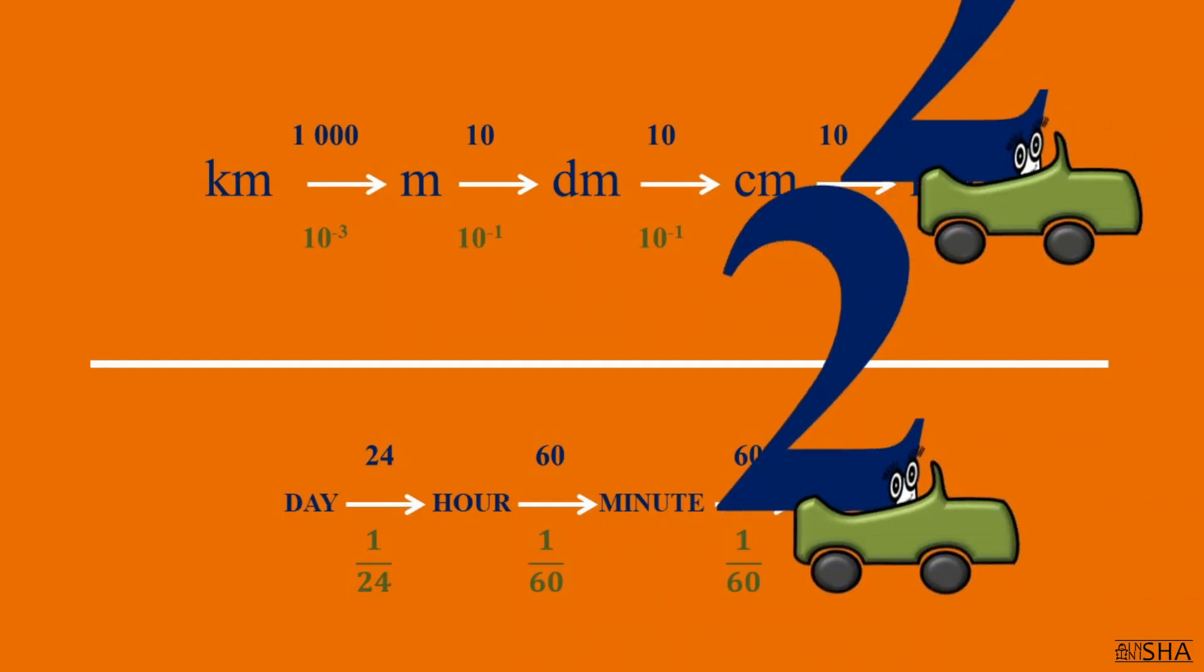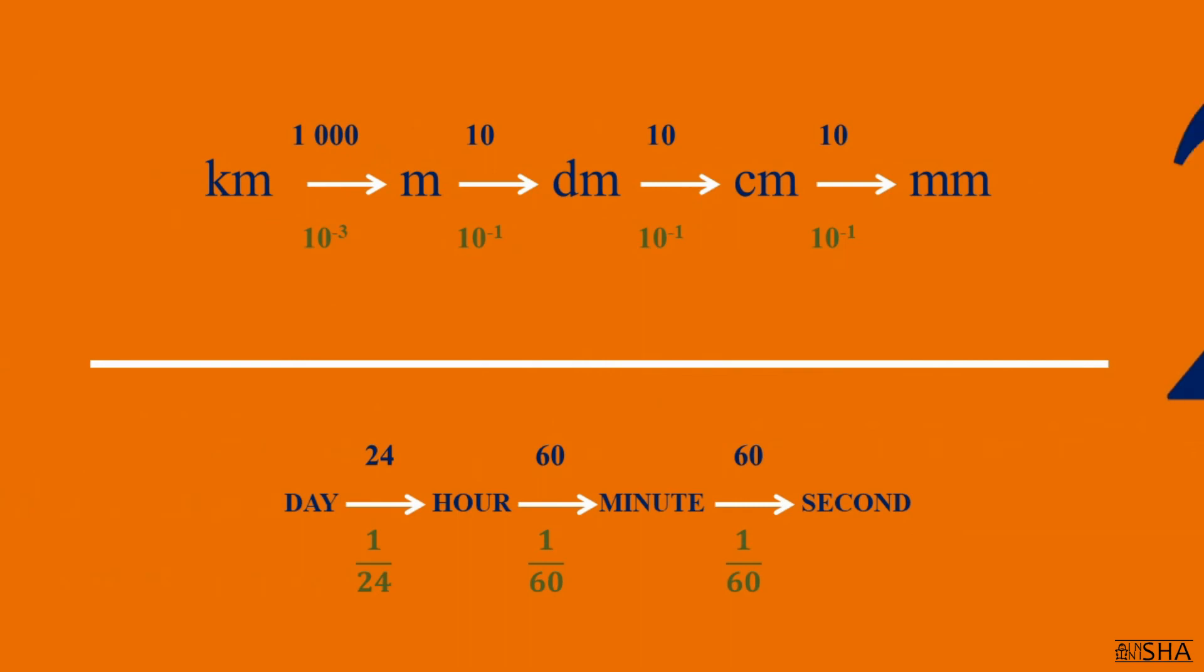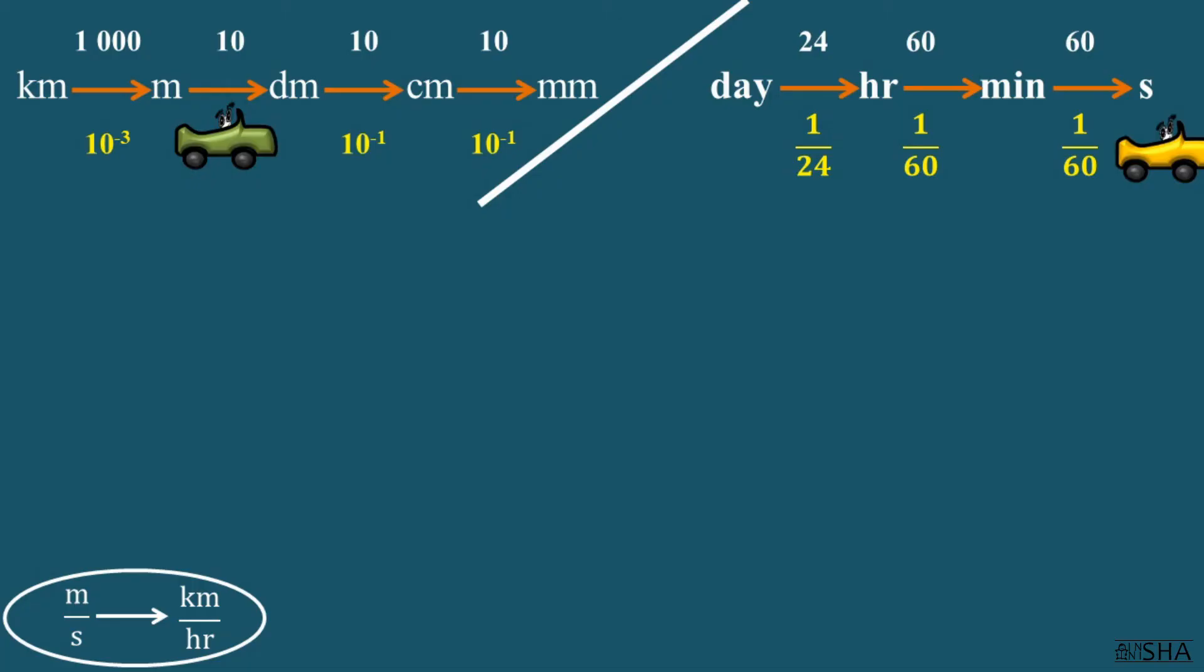Rule number 2. We will convert against the arrow, from SI system to other units of speed. Let's say you need to convert 100 meters per second to kilometers per hour.